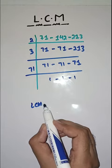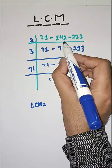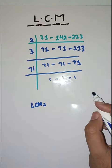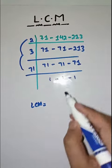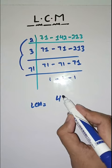So we get LCM of 71, 142, and 213 by multiplying prime factors, which are 71 into 3 into 2, which equals 426.